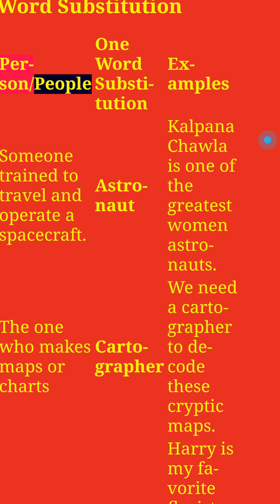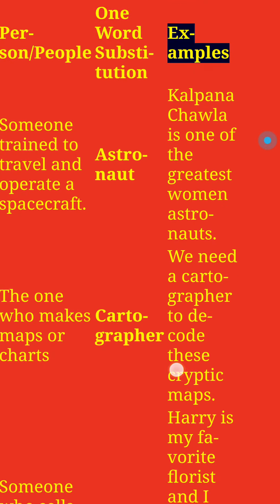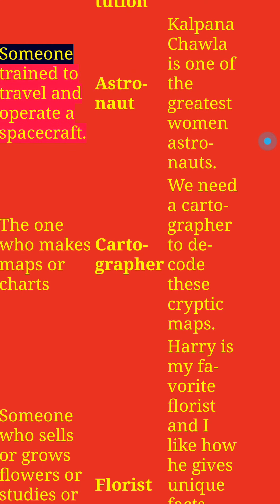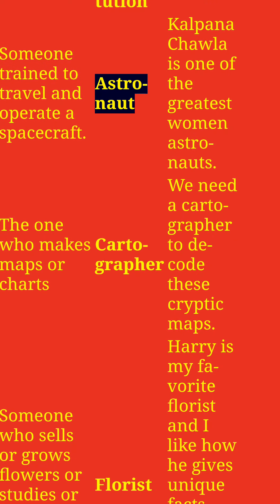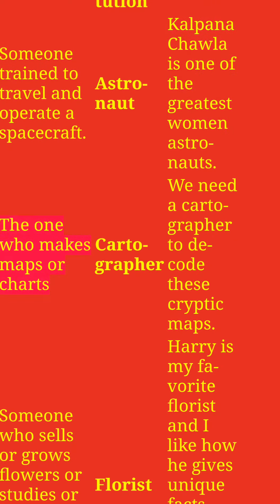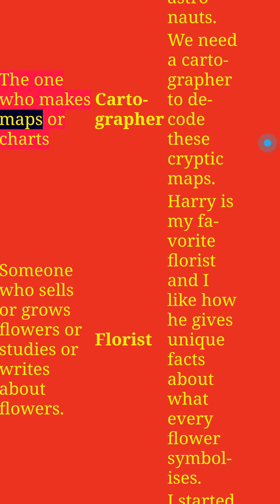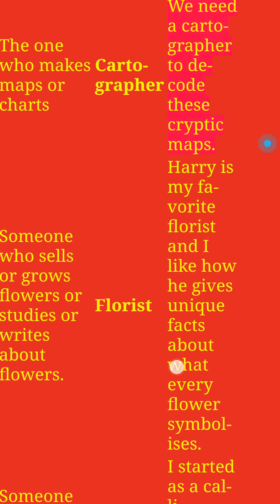Profession Related One Word Substitution with Examples. Someone trained to travel and operate a spacecraft: Astronaut. Kalpana Chawla is one of the greatest women astronauts. The one who makes maps or charts: Cartographer. We need a cartographer to decode these cryptic maps.